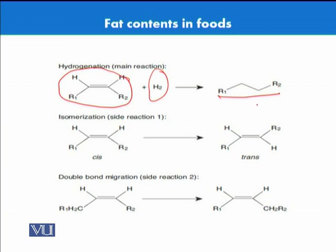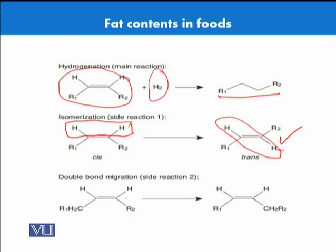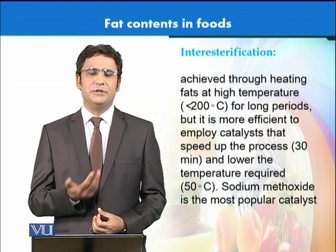During hydrogenation, isomerization can also occur, producing different forms of fatty acids. In the cis configuration, hydrogen atoms are on the same side, whereas in the trans configuration they are on opposite sides — these are called trans fatty acids. We prefer not to have much trans fat in food because it is not healthy. Additionally, hydrogenation can cause double bond migration, where a double bond shifts position within the molecule, producing a different isomer — same molecular formula but different arrangement of elements.